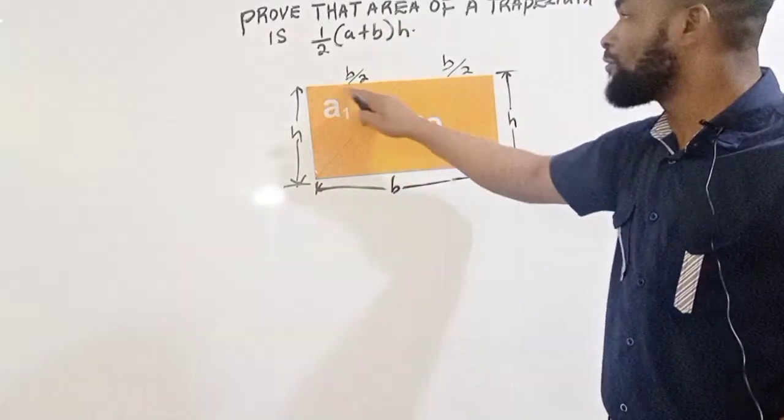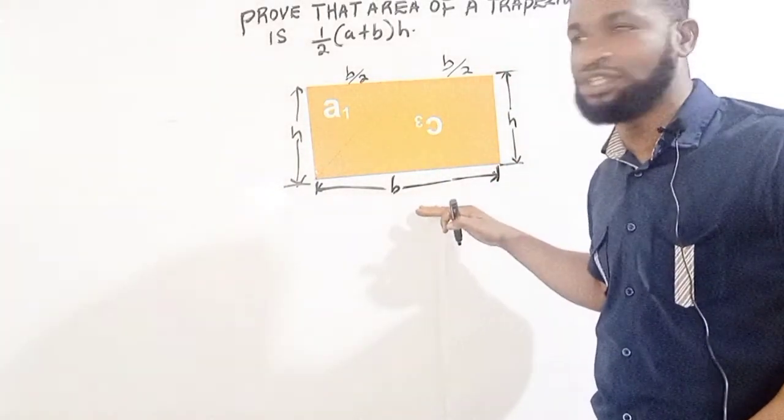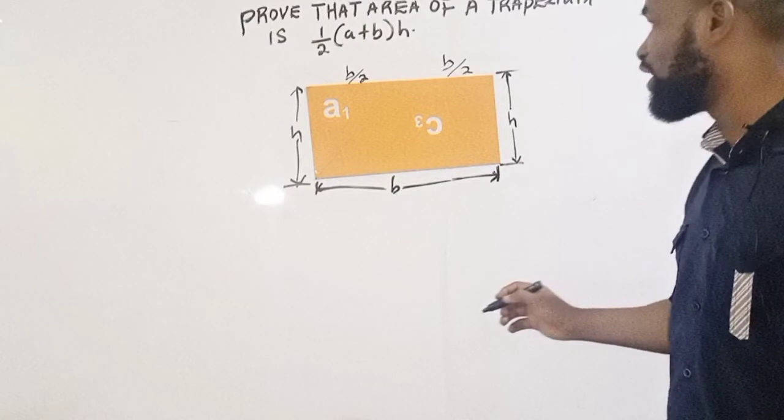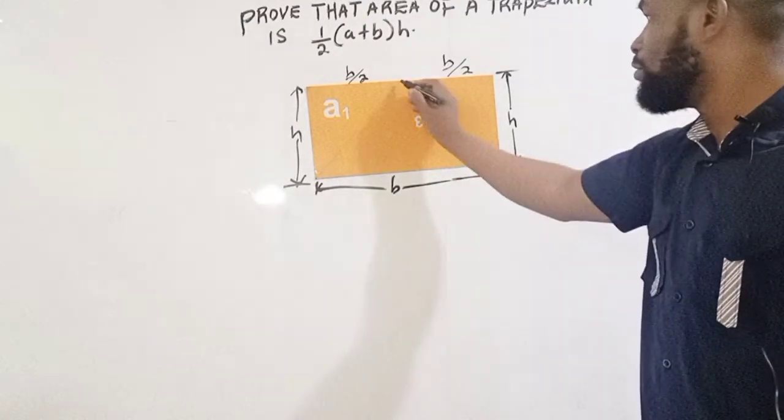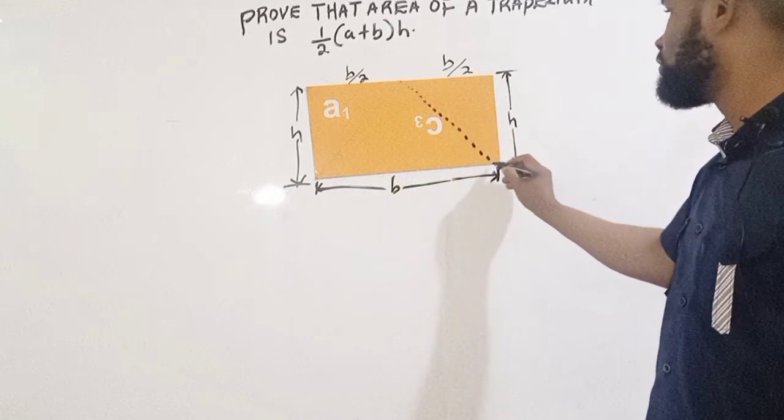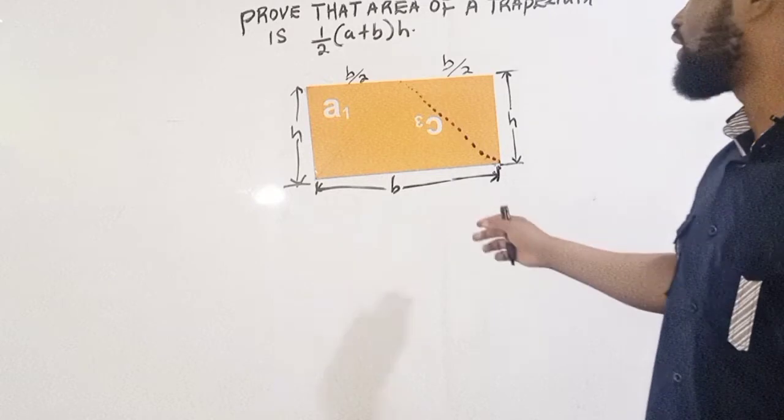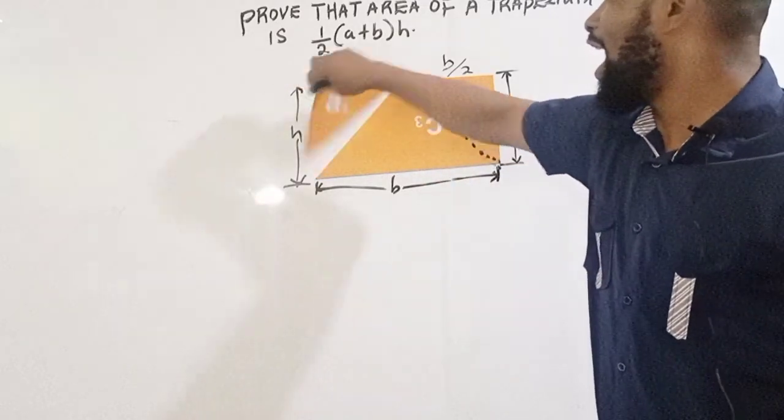So b over 2 plus b over 2 is going to give you b. So what do we do in this case? Remember, I want to do this as well. In this case...